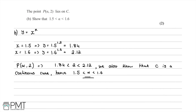There were two marks available. The first mark was for substituting both values 1.5 and 1.6 into the formula and obtaining 1.84 and 2.12. The second mark was for stating that the y values lie below and above 2 and providing a concluding statement that alpha is between 1.5 and 1.6.